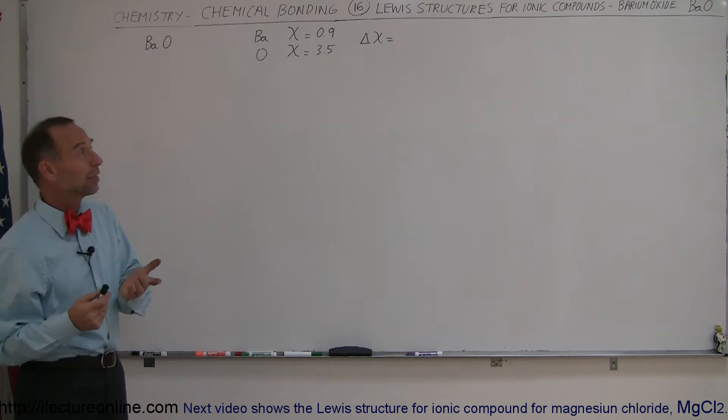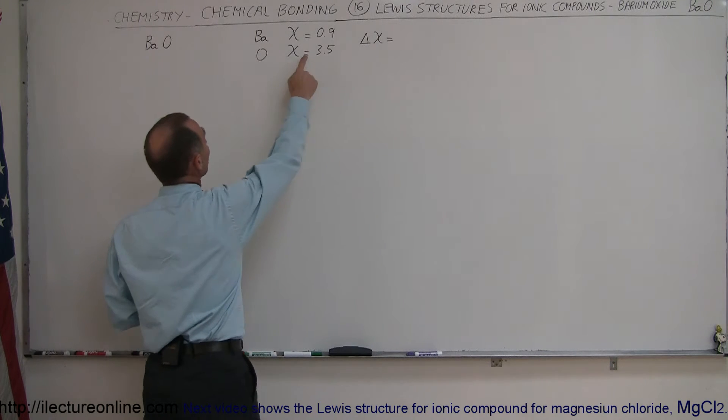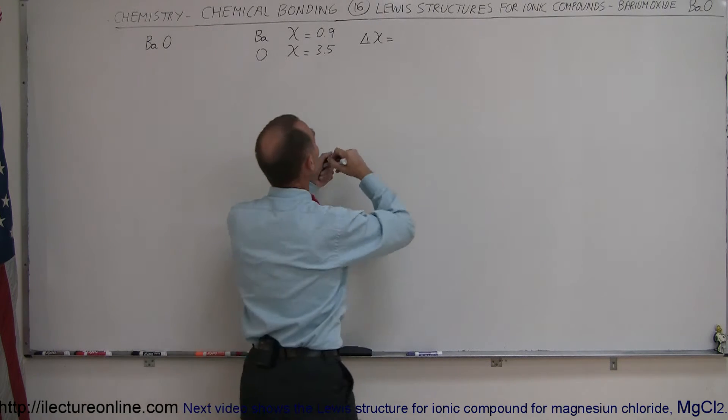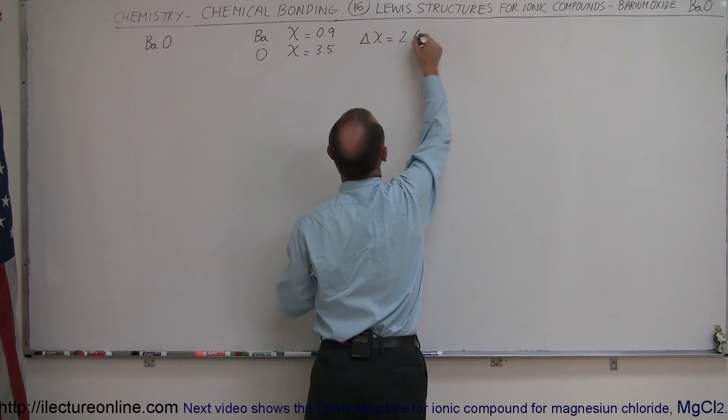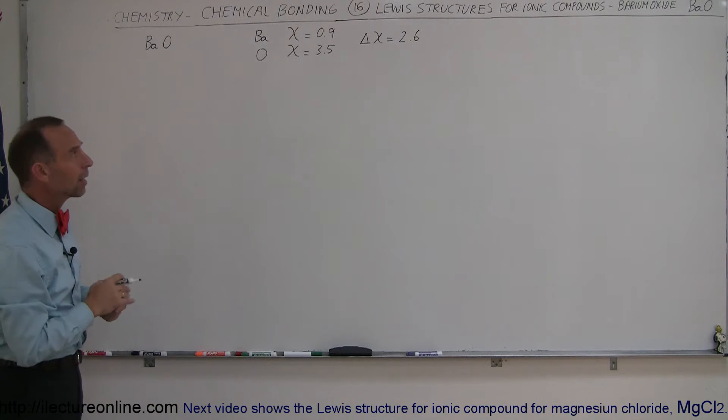First of all, how do we know that this is going to be an ionic compound? The electronegativity for barium is 0.9 and for oxygen is 3.5, so the difference between them is 2.6. The rule is that if it's greater than 2.0, you expect this to be an ionic compound.